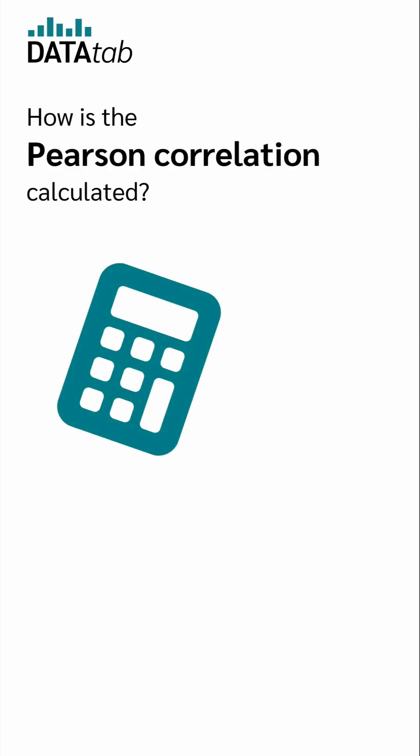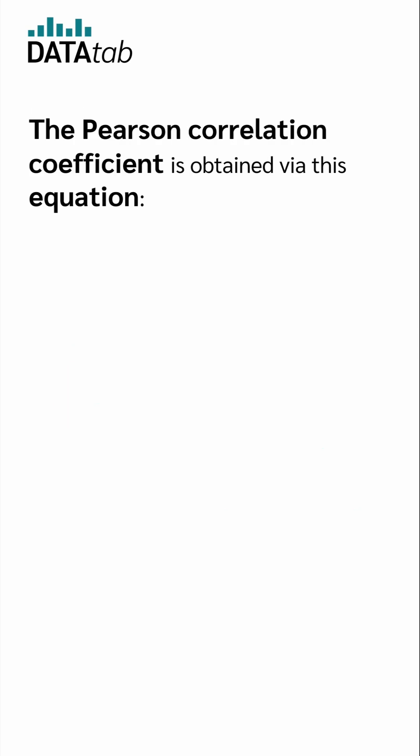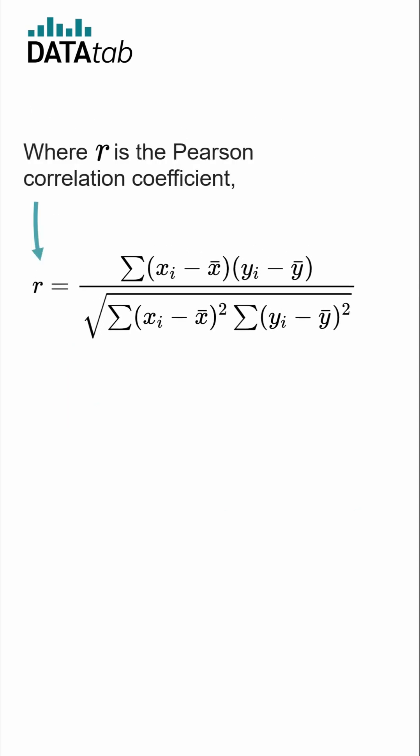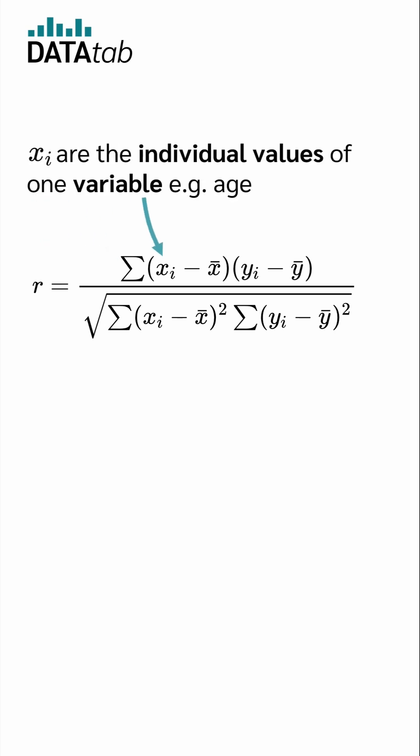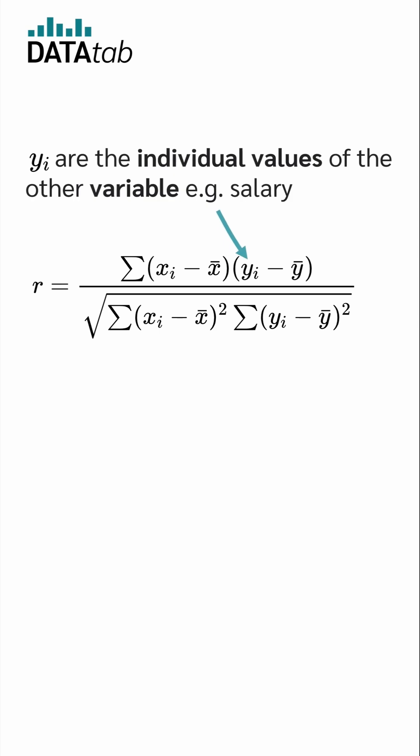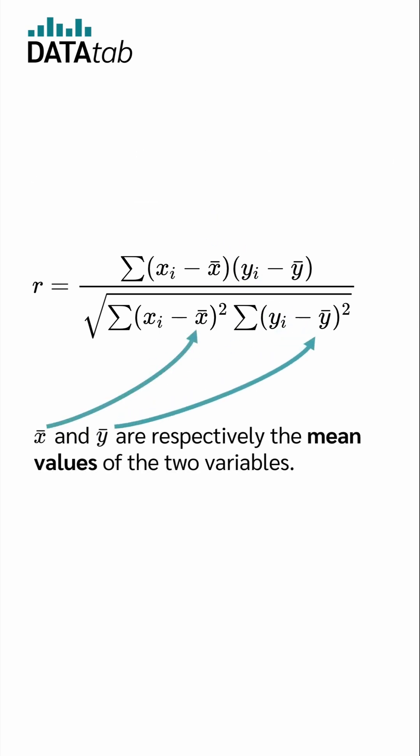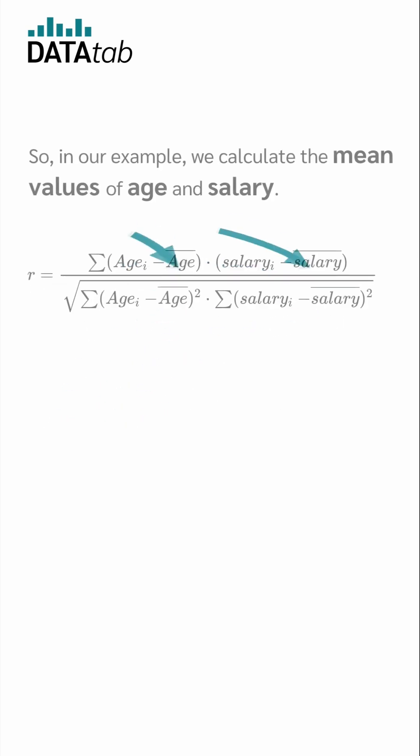How is the Pearson correlation calculated? The Pearson correlation coefficient is obtained via this equation, where r is the Pearson correlation coefficient, Xi are the individual values of one variable, e.g. age, Yi are the individual values of the other variable, e.g. salary, and x-bar and y-bar are respectively the mean values of the two variables.